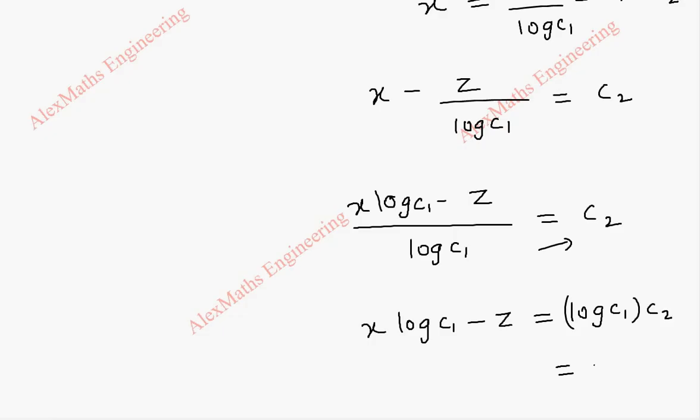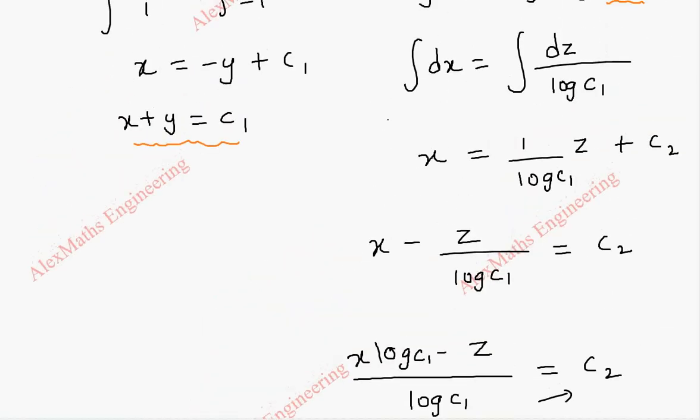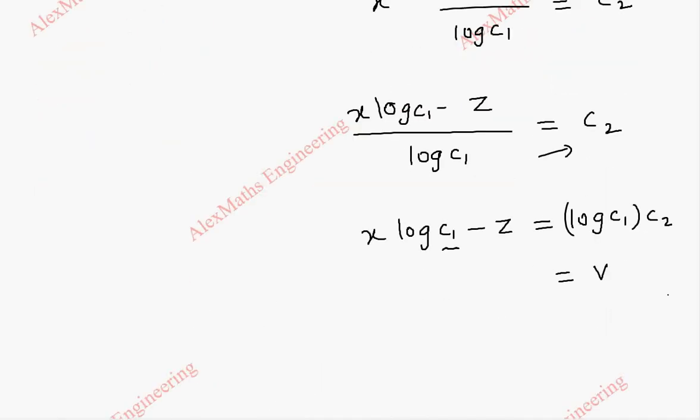So we take this as v. And here the c1 is replaced back as x plus y. So it is x into log of x plus y minus z is our v. And x plus y is c1 which is x plus y is equal to u.